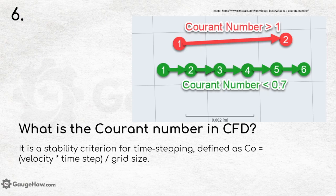What is the Courant number in CFD? A very important question. It is a stability criterion for time stepping, defined as Co = velocity × time / grid size.